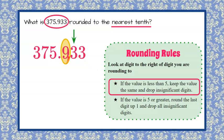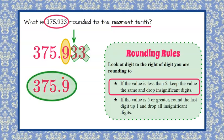So we are going to keep the 9 as a 9 and then we are going to drop the insignificant digits to the right. So to round this value that was given to us, the answer is going to be 375 and 9 tenths. And there you have it. That's your answer rounded to the nearest tenth.